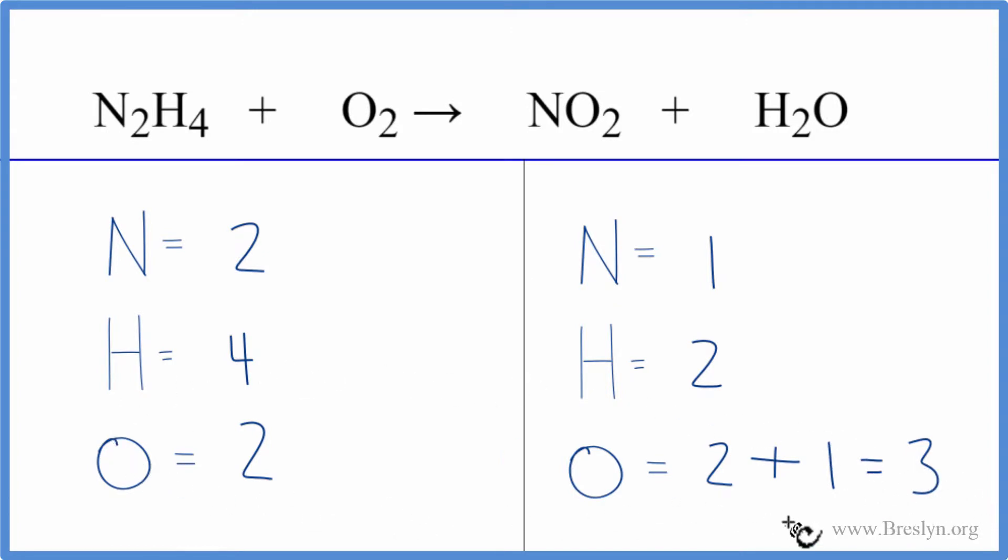Let's leave the oxygens till last. They might just work out. And let's fix the nitrogens because we could put a two in front of the NO2. One times two. That would balance the nitrogen atoms.